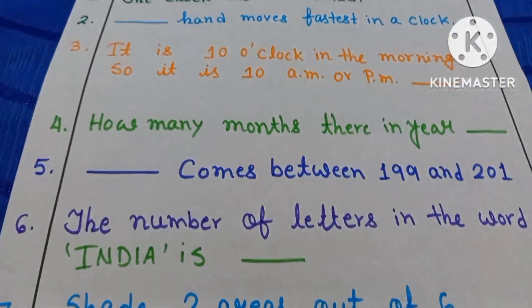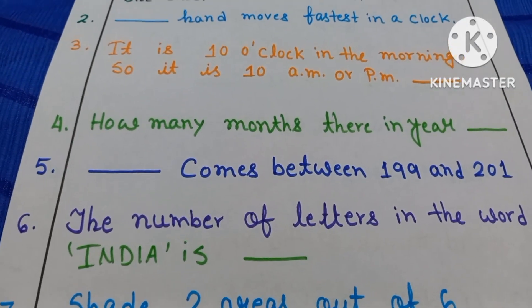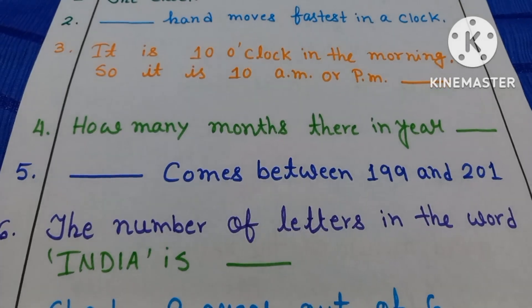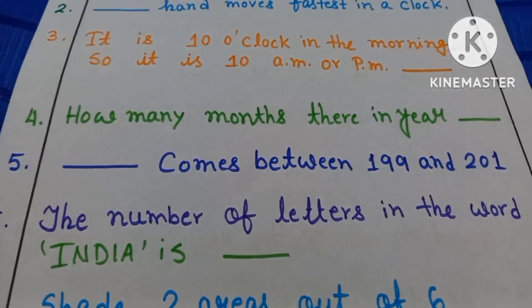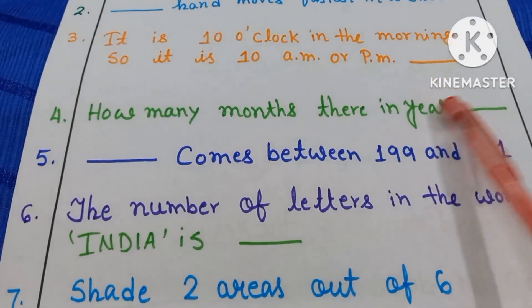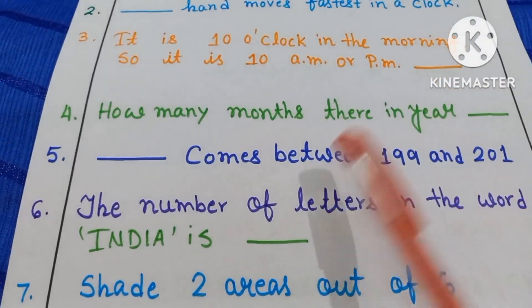Number 4. How many months are there in a year? Yes, 12 months. Here you have to write 12 months are there in a year.